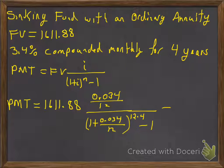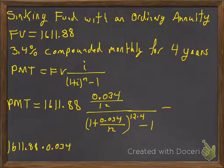If we write this out in the calculator, we do $1,611.88 times 0.034 divided by 12. We could put parentheses around it, but it's not needed since we only have one term in the numerator. However,